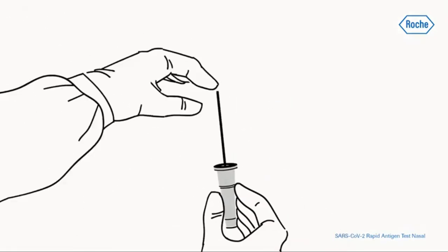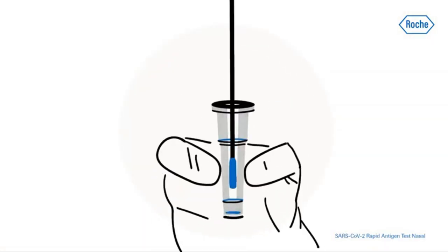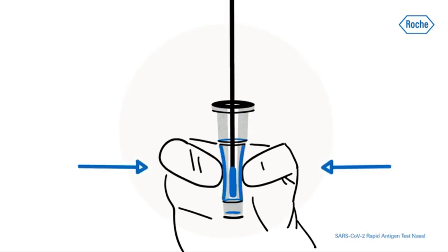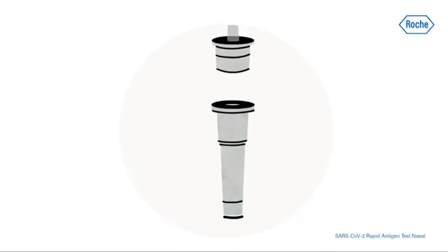Insert the swab into an extraction buffer tube. While squeezing the buffer tube, stir the swab more than 10 times. Remove the swab while squeezing the sides of the tube to extract the liquid from the swab. Press the nozzle cap tightly onto the tube.